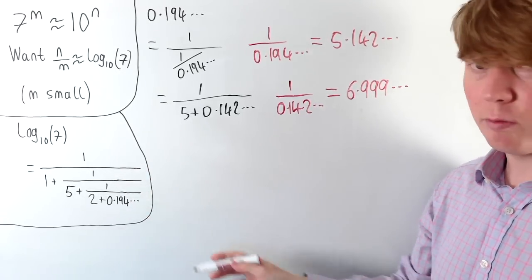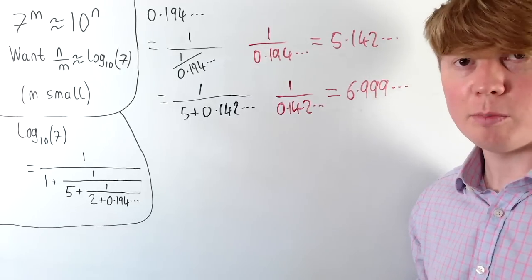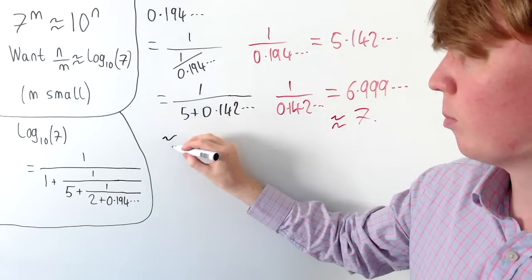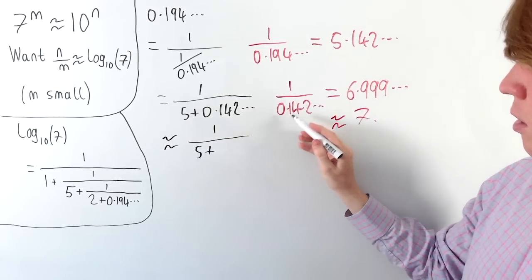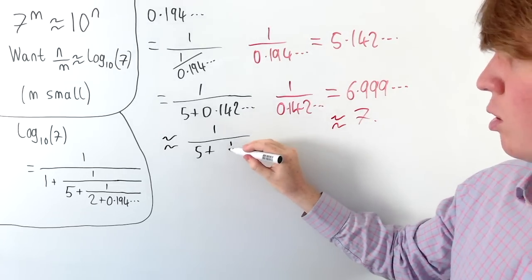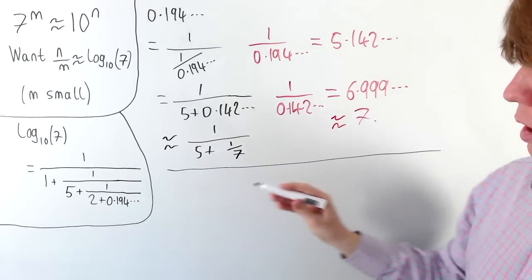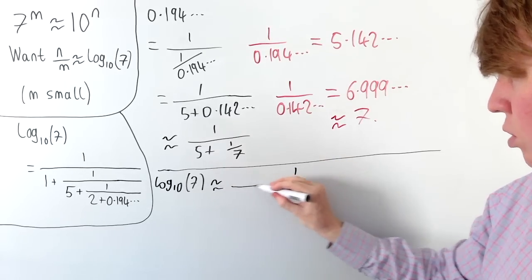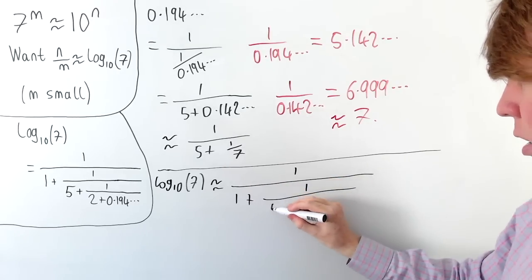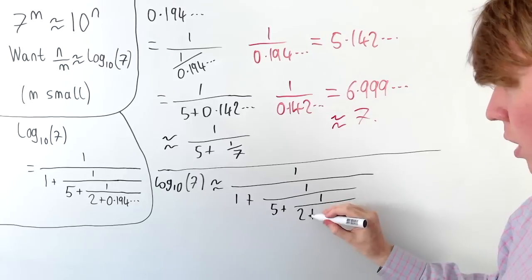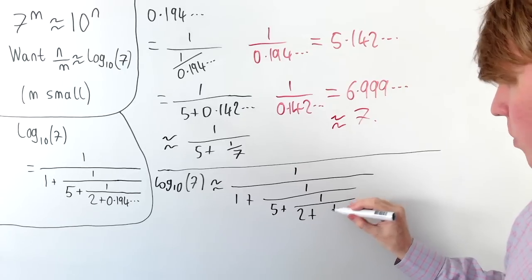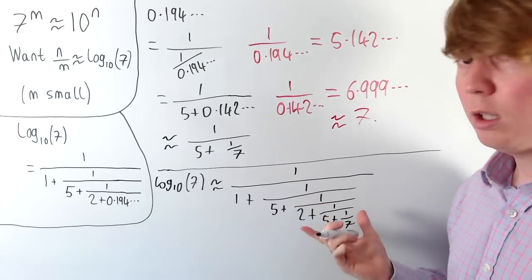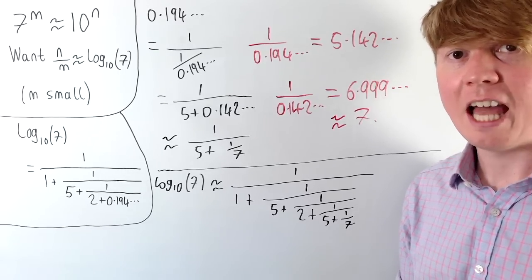If we continued further we would get better and better approximations, but for our purposes we stop and say 1 over 0.142 is approximately 7. This tells us that the 0.194 term is approximately 1 over 5 plus 1 seventh, which equals 1 over 36 sevenths... So our approximation for log base 10 of 7 is approximately equal to 1 over 1 plus 1 over 5 plus 1 over 2 plus 1 over 5 plus 1 seventh.